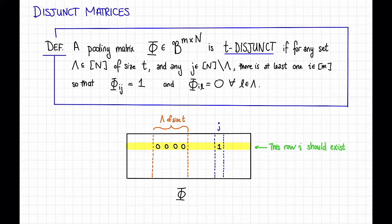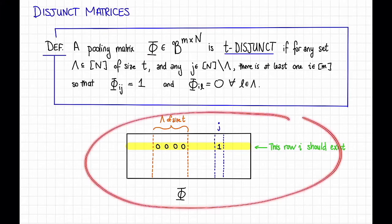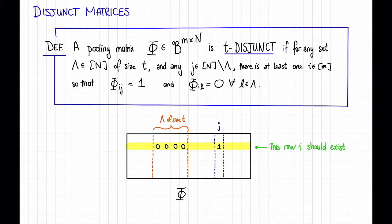So we say that a pooling matrix φ like that is t-disjunct if the following holds. There's a lot of quantifiers here, so I'm going to point at this picture while I read the definition. So we say that it's t-disjunct if for any set λ subset of the numbers 1 through n. So here the numbers 1 through n index the columns of φ, and so λ is going to be some subset of the columns. It doesn't necessarily need to be contiguous, I've just drawn it that way. And λ has size t.